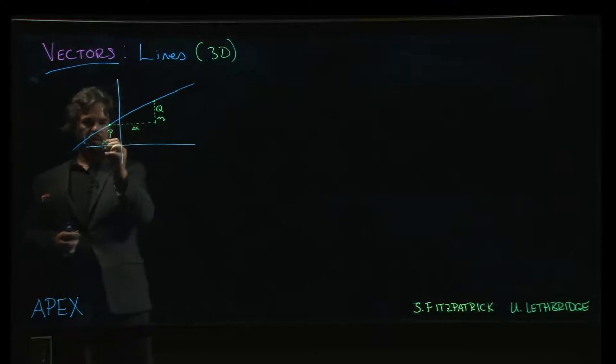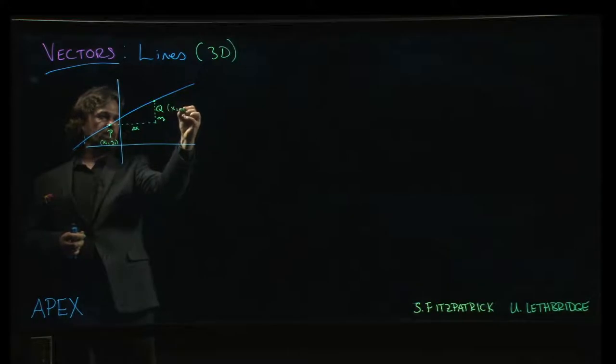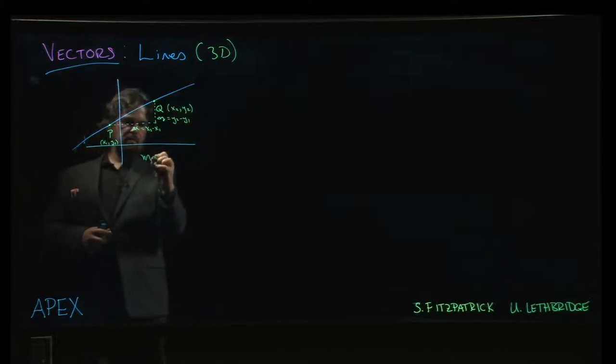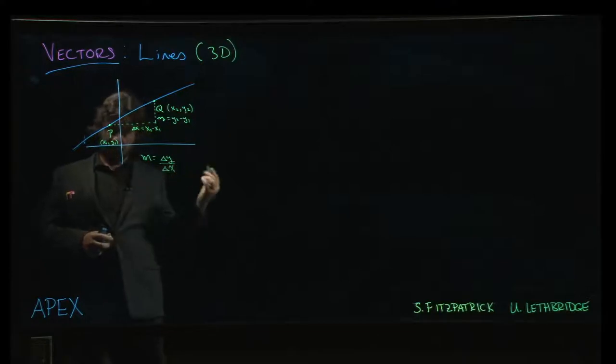And how do we get those? Well, if we know the coordinates of our two points, if, say, this is the point x1, y1, and this is the point x2, y2, then this is going to be x2 minus x1. This is going to be y2 minus y1. And so the slope, delta y over delta x, we know how to get that.